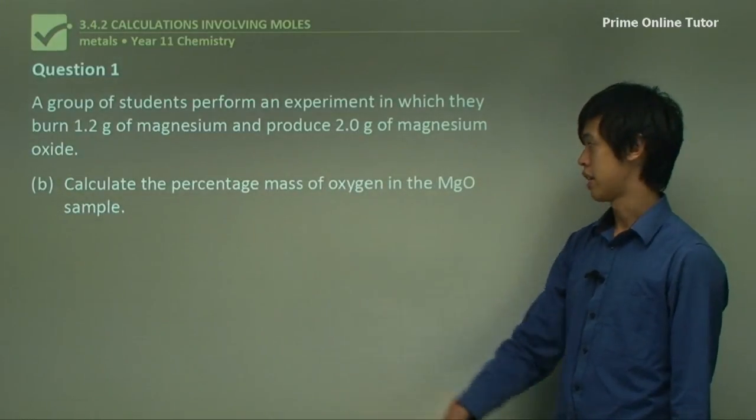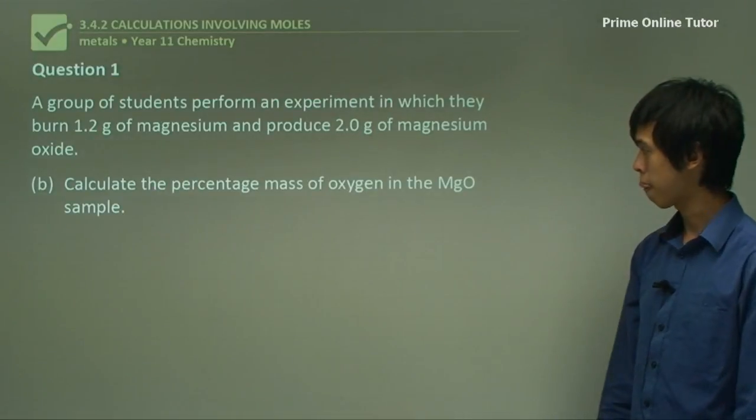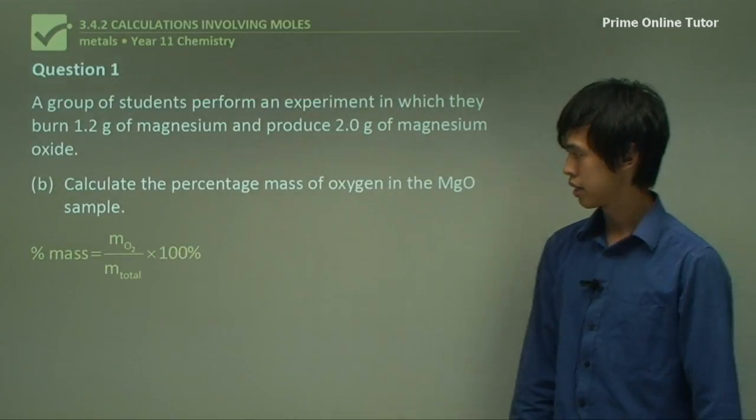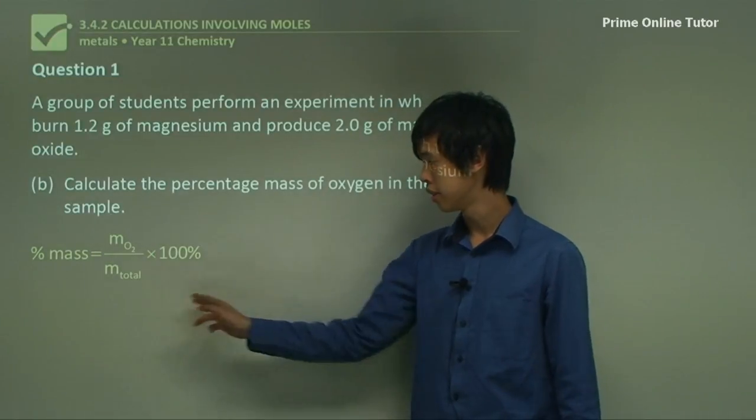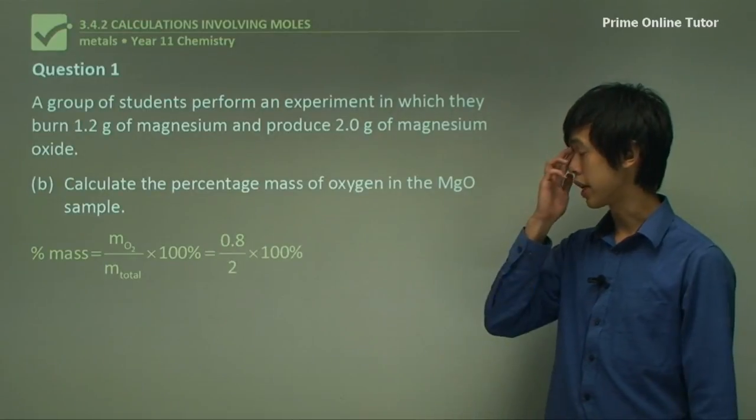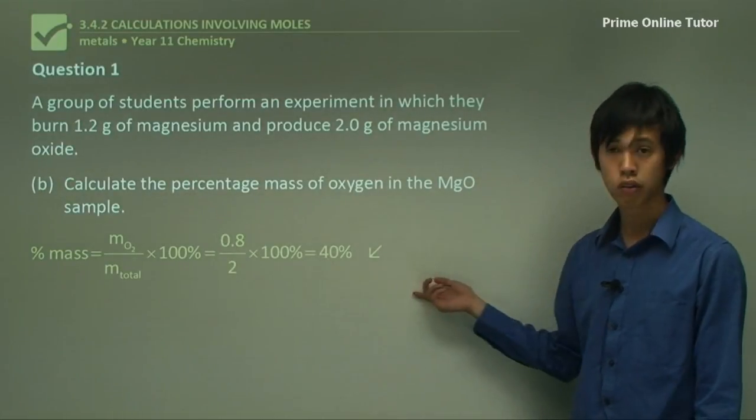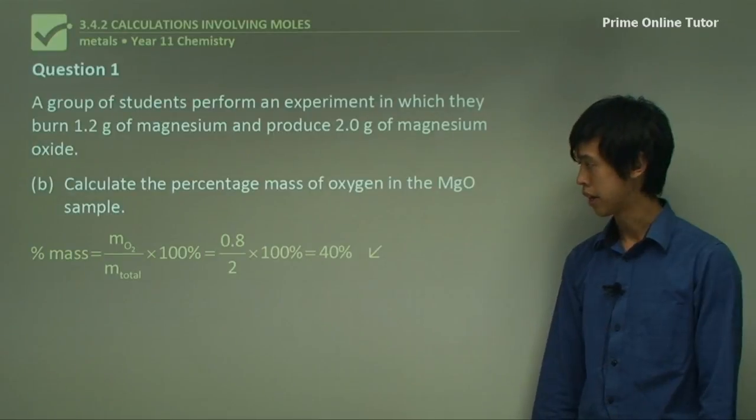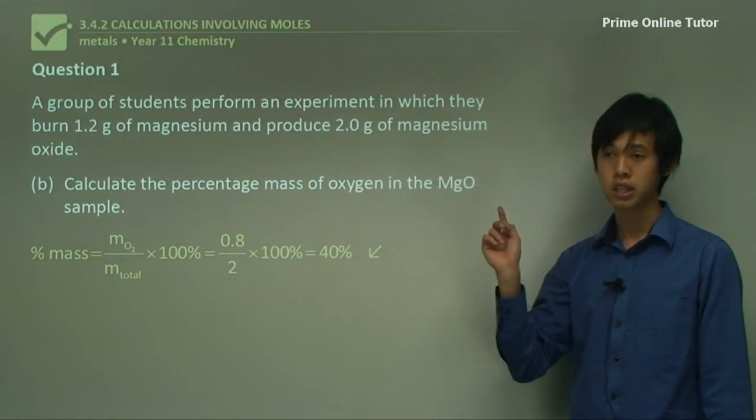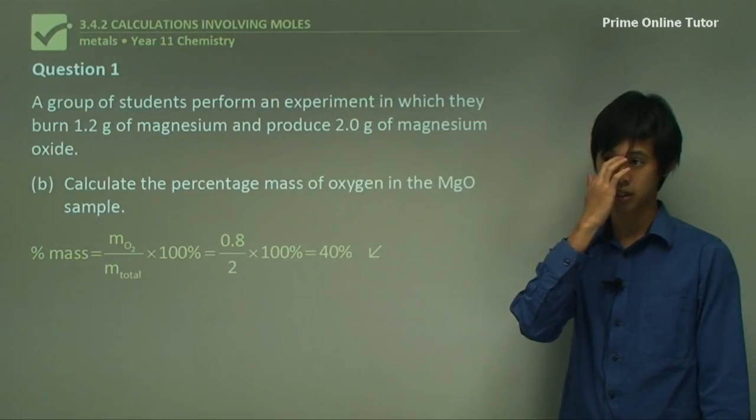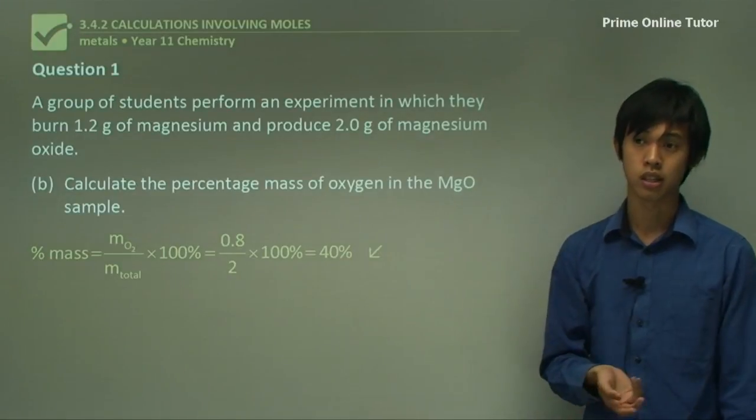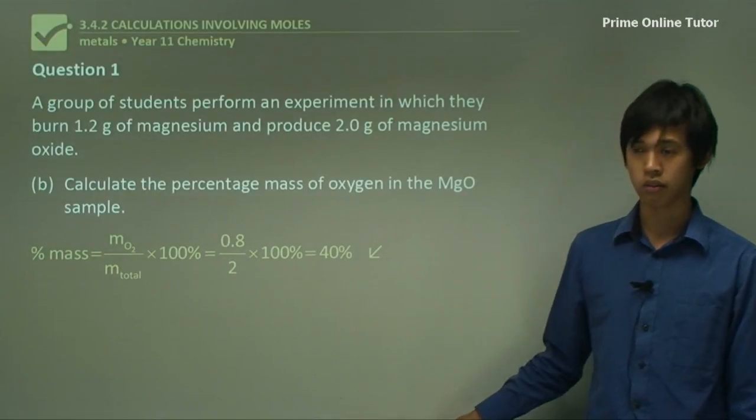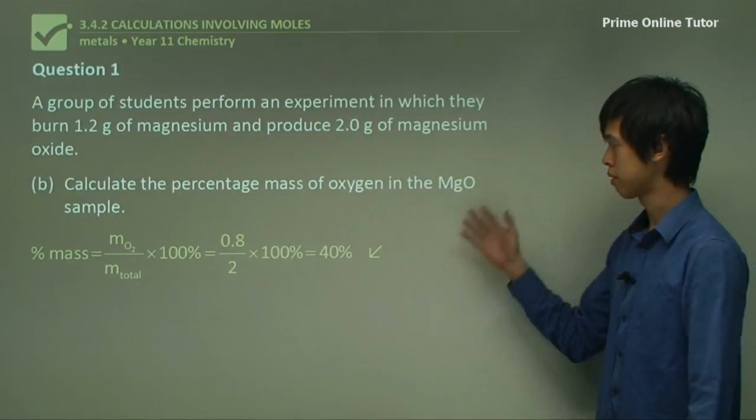Calculate the percentage mass of oxygen in the MgO sample. So what percentage of MgO is actually oxygen? The percentage mass equals the mass of the oxygen over the mass total, times 100%. So 0.8 over 2 times 100% gives you 40%. So it's about 40% oxygen in this material. And if you think about the molar masses again, they sum to equal 40, and the molar mass of oxygen is 16. So 16 in 40 is 2 in 5, which is 40%. So that works out perfectly.